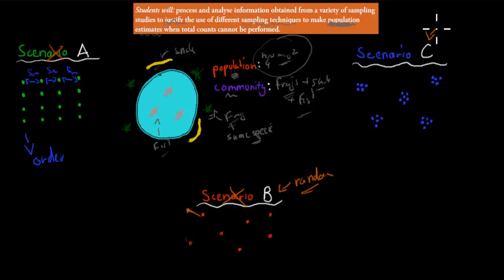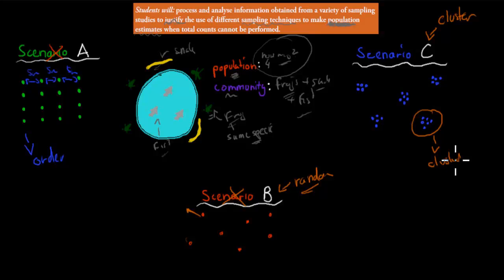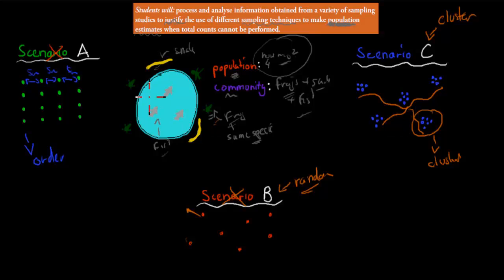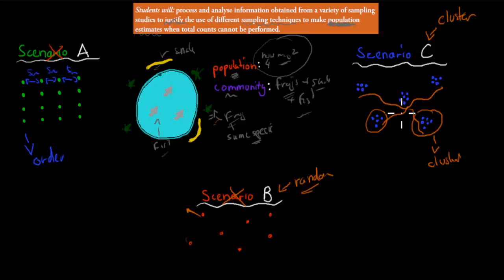We usually find a clustered distribution, which means members of a species are found in one area — they're all clustered together. For example, frogs will be clustered near a river. We usually find things in clusters because they need to be close to resources: food, shelter, and space for survival. That's the distribution we find most of the time.